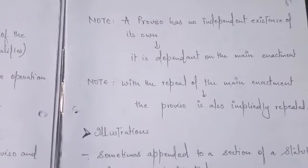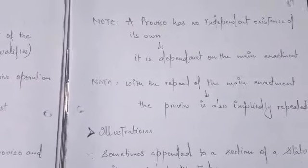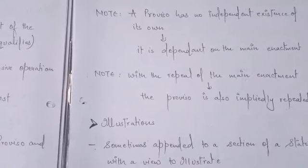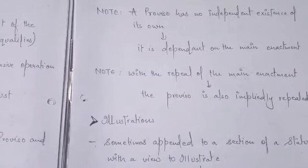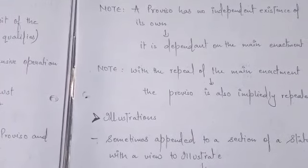But we also need to keep in mind that the proviso has no independent existence of its own and is dependent on the main enactment. That is to say, if the main enactment is repealed, then the proviso automatically or impliedly will be repealed itself.